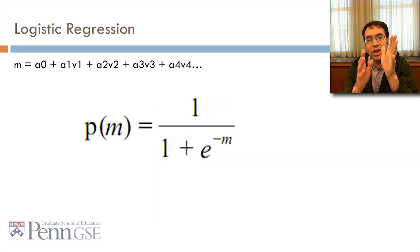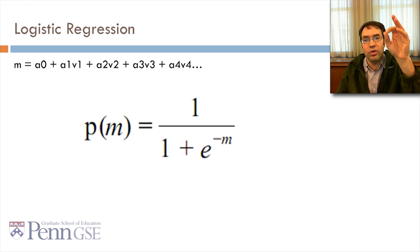What you do is you take a function m, which is a constant plus a set of variables and weights, and you compute p of m is equal to 1 over 1 plus e to the negative m.